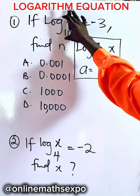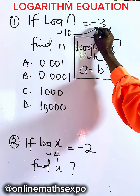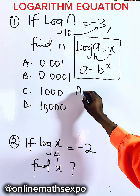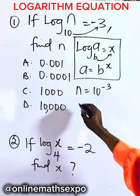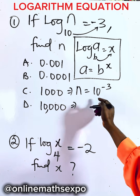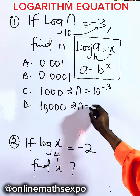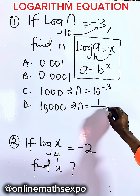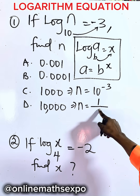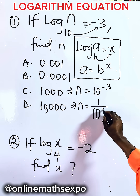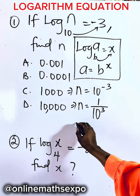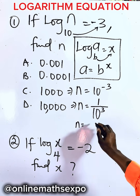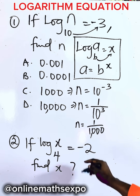Applying it here, we are going to raise 10 to the power of negative 3 to find n. So we have n equals 10 to the power of negative 3. To remove the negative power, it becomes a reciprocal: 1 over 10 to the power of 3. And 10 to the power of 3 is 10 multiplied 3 times, which gives us 1,000.